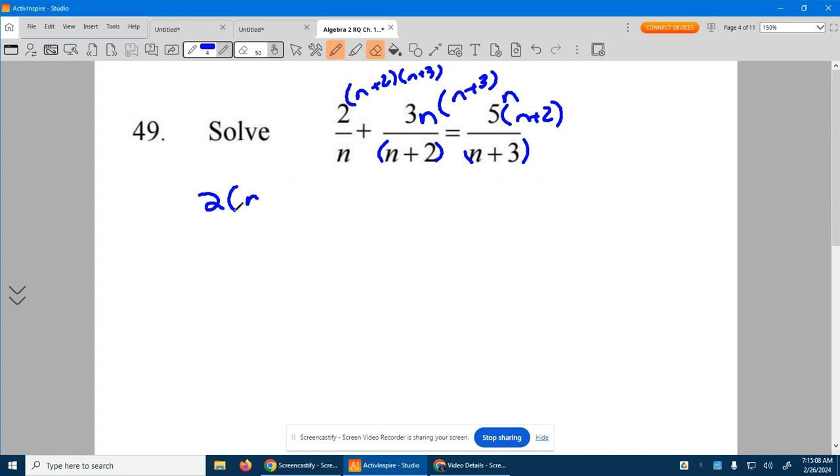So up top, I have 2 times an n plus 2 times an n plus 3 plus 3n times an n plus 3, equaling 5n times an n plus 2. That's what we end up with.